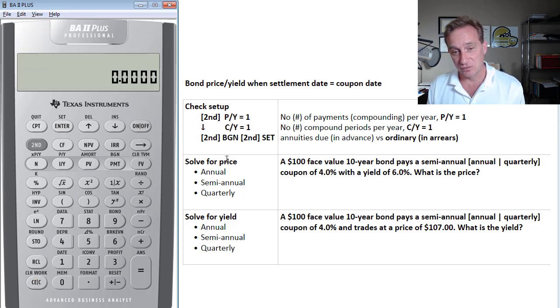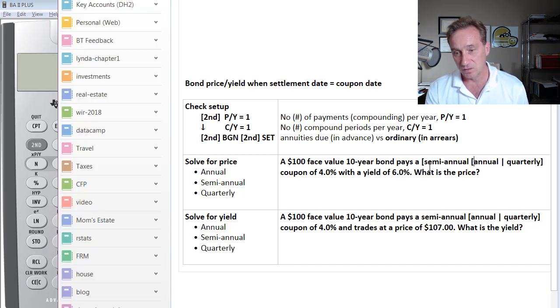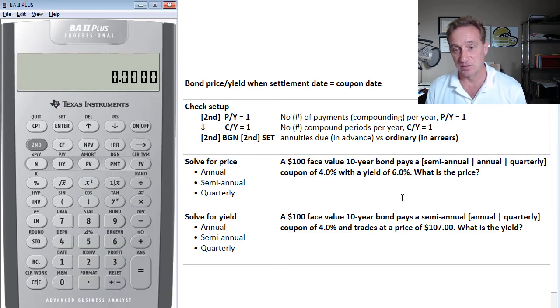Okay, so I just want to do solve for price, solve for yield, because these are the most common. And then I've got here just a word problem, very typical of the kind of word problems that I've written in our own database. Oftentimes, mine here are very succinct. Sometimes the essential assumptions are buried in a longer, more wordy paragraph, but here I tried to write as brief as I could. So here's the first problem that asks us to solve for price. A $100 face value, 10-year bond pays a, let's say, semi-annual coupon of 4% with a yield of 6%. What is the bond's price? Or actually what I want to say here is this could be semi-annual or annual or quarterly in terms of that coupon payment.